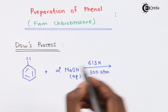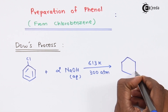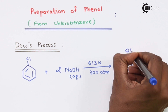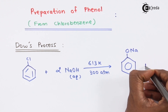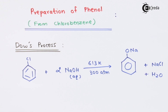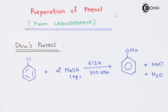The product obtained in this step is a benzene ring with an ONa group, also known as sodium phenoxide. However, this is not the final product we need — we need phenol. So this sodium phenoxide is then treated with dilute HCl.